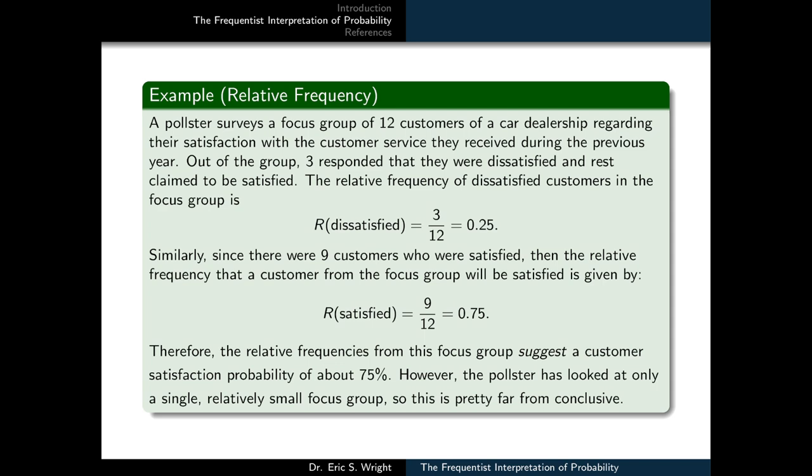We'll illustrate relative frequency, and then later frequentist probability, through some examples. We imagine a pollster who surveys a focus group of 12 customers of a car dealership regarding their satisfaction with the customer service they received during the previous year. Out of the group, three responded that they were dissatisfied, and the rest claimed to be satisfied. The relative frequency of dissatisfied customers in the focus group is 3 over 12, or 25%.